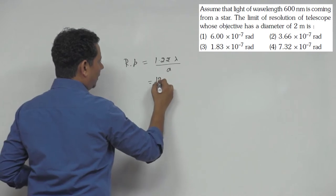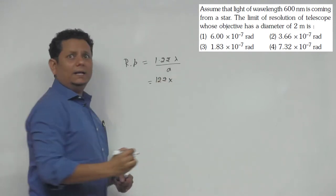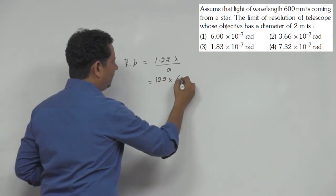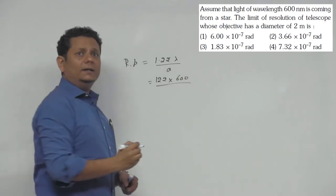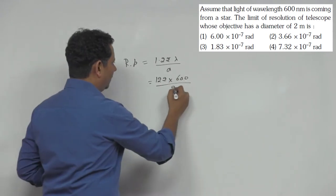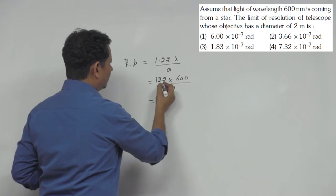So this will be equal to 1.22 multiplied by lambda, which is given as 600, divided by 2 meter. Alright. So basically multiply this by 3 and you will get your answer.